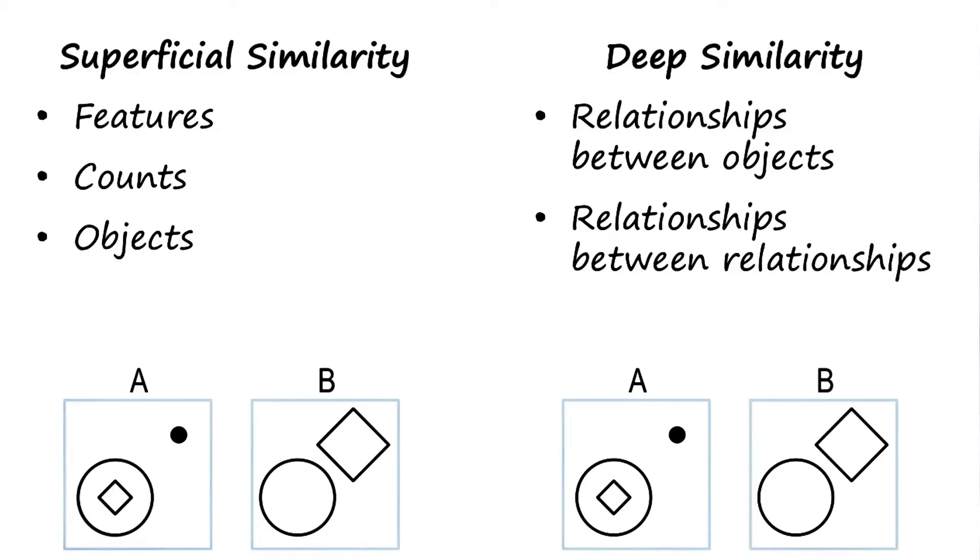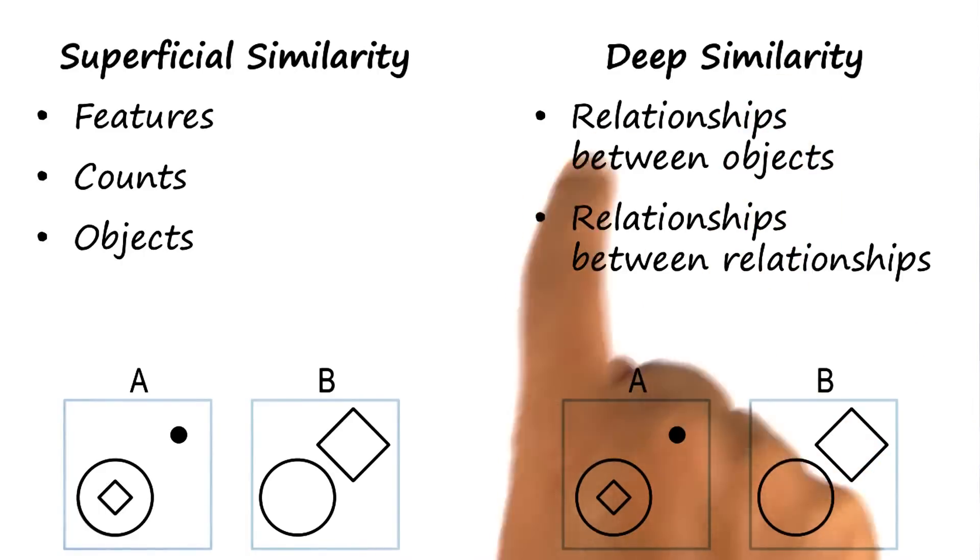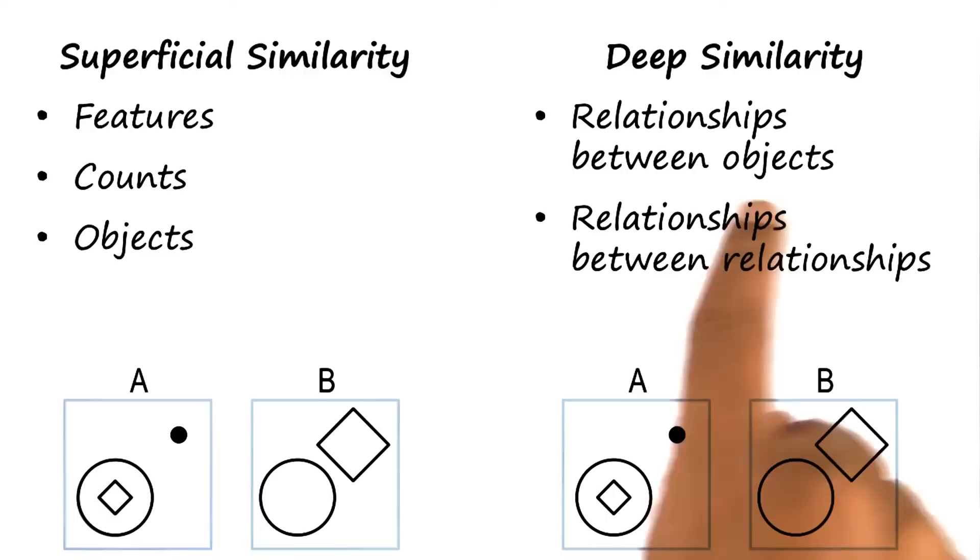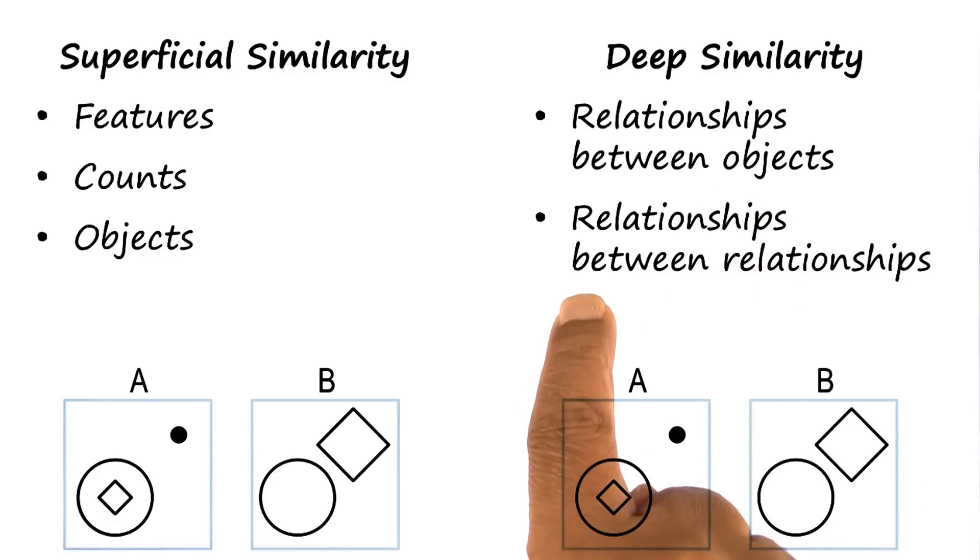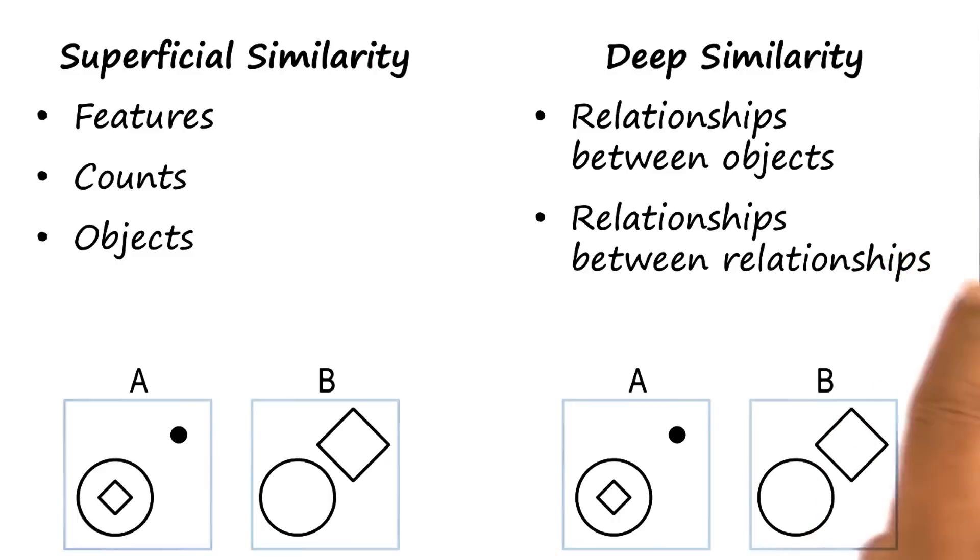I'm sure you have come across problems like that on the Raven's test. This is an example of a binary relationship, a relationship between two objects. This is an example of a higher order relationship, a tertiary relationship, if you wish. This is a relationship between relationships between objects.